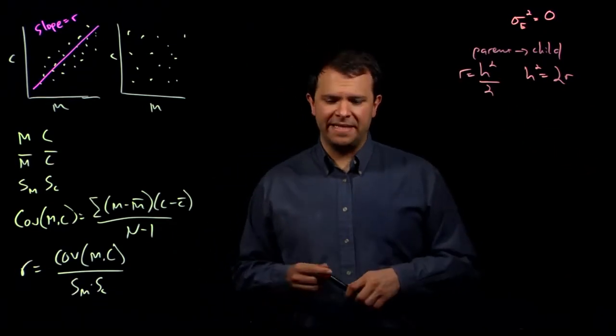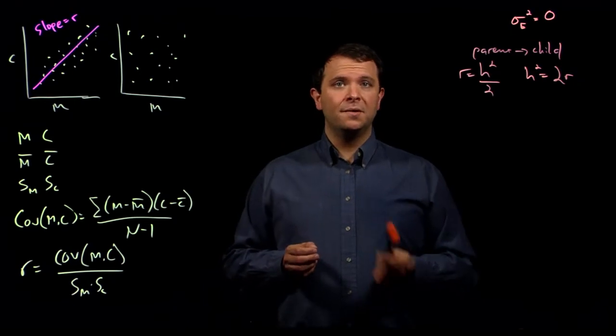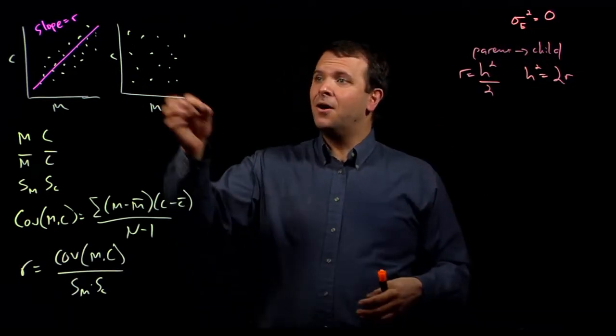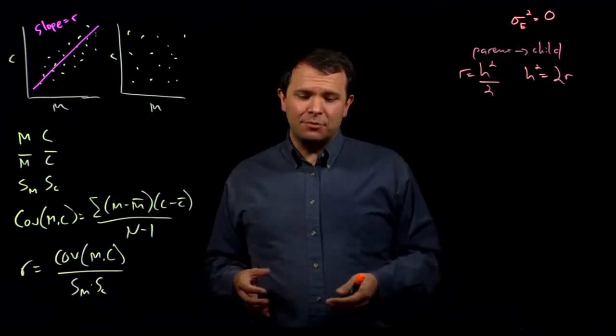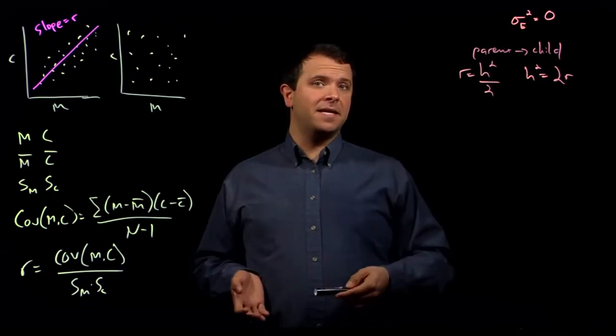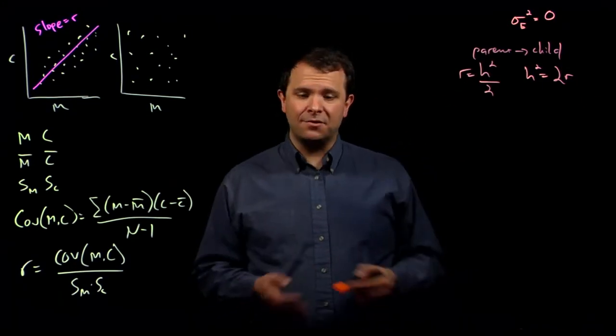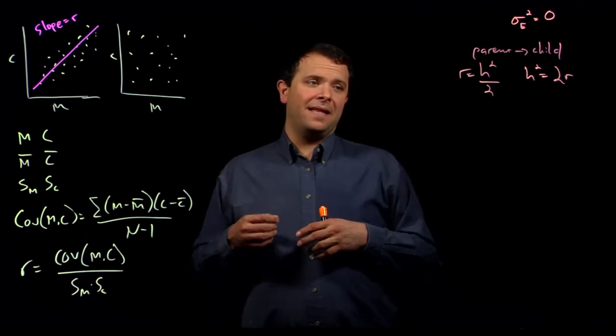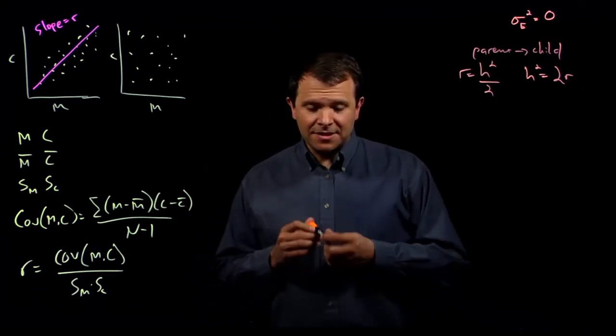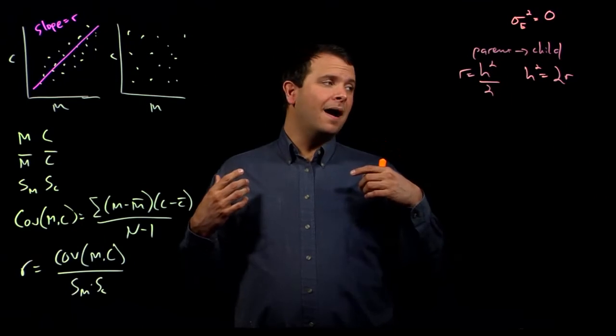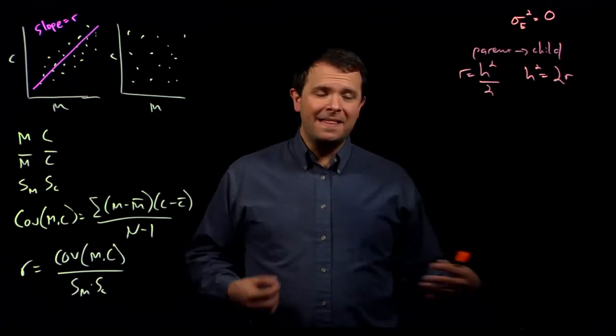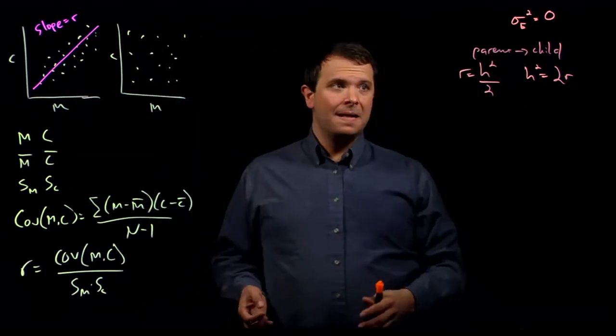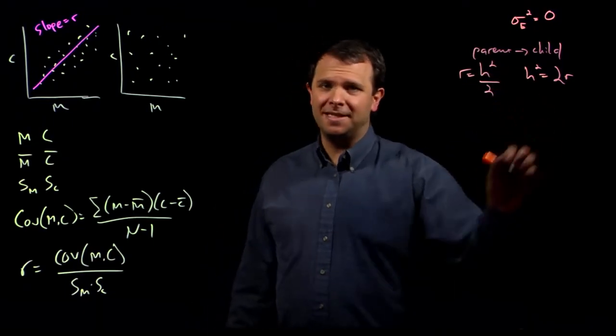So, two quick points before we leave this. First, remember that this assumes that the environmental effects on this relationship are zero. And this assumption breaks pretty badly when we consider humans. For example, parents that grew up in food-sufficient households tend to also rear children that are in food-sufficient households. And so, if you are studying a trait like height that is affected by nutritional status, you are going to see a correlation there that is not just due to this narrow sense heritability.